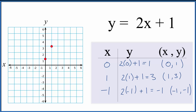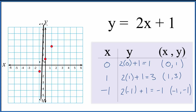With two points I could draw the line, but I'd like to get a third point in case I made a mistake. So here I have minus 1, minus 1. I can put the negative 1 here and go down. And now I could draw a line through these three points. This is the graph for y equals 2x plus 1. We could even put a little arrow on the end to show that it keeps going.